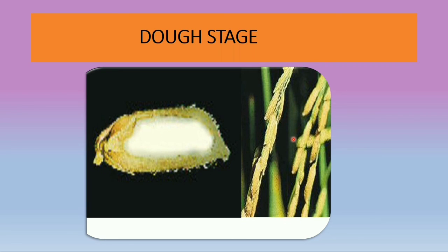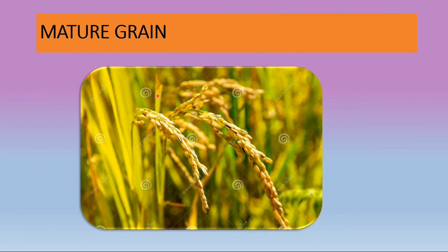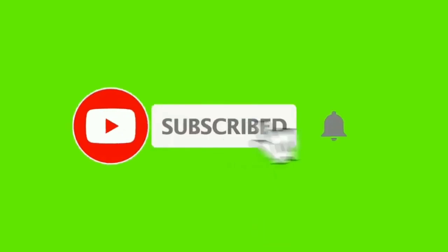In the mature grain stage, the grains are fully developed and matured, showing a golden yellow color, and are hard. Most of the upper leaves are dry and the panicles bend down, as seen in the figure. These are the growth stages of the paddy. If you like this video, please subscribe to the channel for more updates. Thank you.